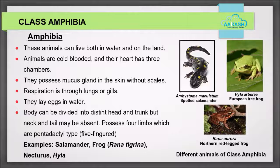Class Amphibia: these animals can live both in water and on land, hence the name amphibians. These animals are cold-blooded and their heart has three chambers. They possess mucous glands in the skin without scales. Respiration is through lungs or gills. They lay eggs in water. The body can be divided into distinct head and trunk, but neck and tail may be absent. They possess four limbs which are pentadactyl type, that is five-fingered. Examples: Salamander, Frog (Rana tigrina), and Necturus.